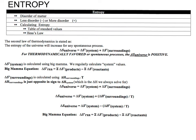Entropy is a measure of disorder, and nature tends toward disorder. If you don't believe me, go clean your room and see how long it stays clean. We tend to disorder, and that is considered a positive value. The more disorder we have, the more positive our numerical value of entropy is. The less disorder we have, our entropy value is negative. We can calculate delta S using a table of standard entropy values and apply Big Mama, also known as Hess's Law.